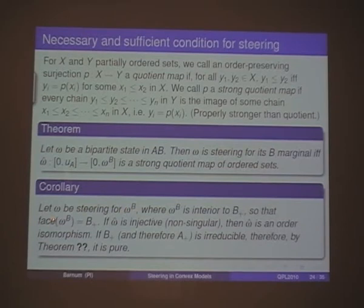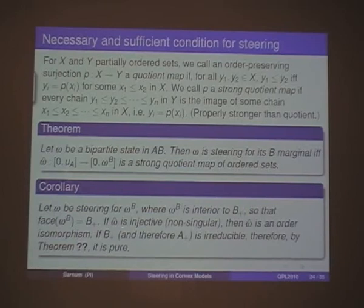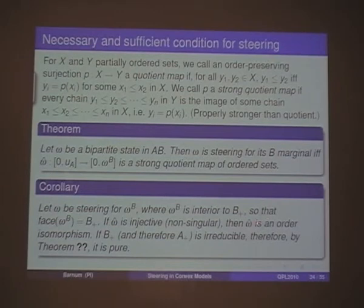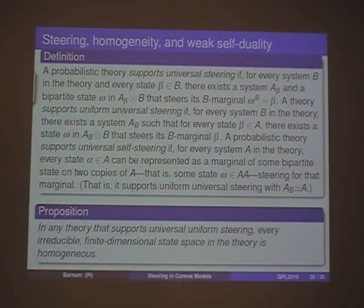A corollary is that if a state steers for its marginal and the marginal is in the interior of its cone — analogous to full Schmidt rank in quantum mechanics — and the associated map is surjective, then the state actually has to be essentially an isomorphism, and hence pure. So we're looking for conditions under which we'd have a lot of pure purifications.